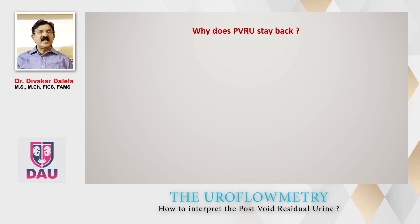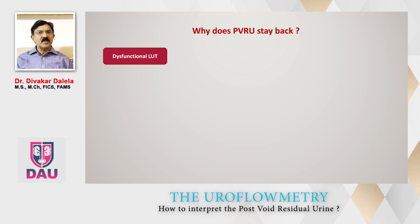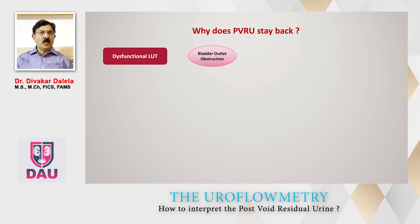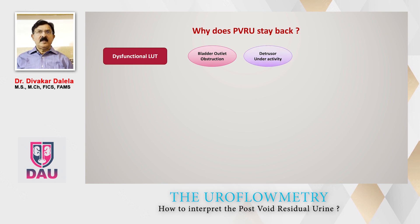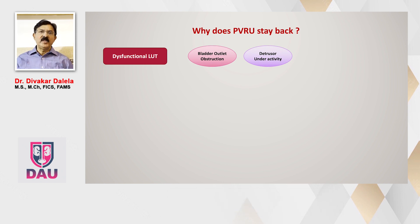Why does urine stay back inside the bladder? The first and foremost reason — which we as urologists consider very common — is some kind of abnormality in the functioning of the lower urinary tract. Dysfunctional lower urinary tract is either on account of bladder outflow obstruction due to BPH, cancer prostate, stricture, meatus stenosis, ureteric stone, and many other clinical conditions, or as a result of detrusor underactivity. Either or a combination of these gives a variable degree of PVRU.